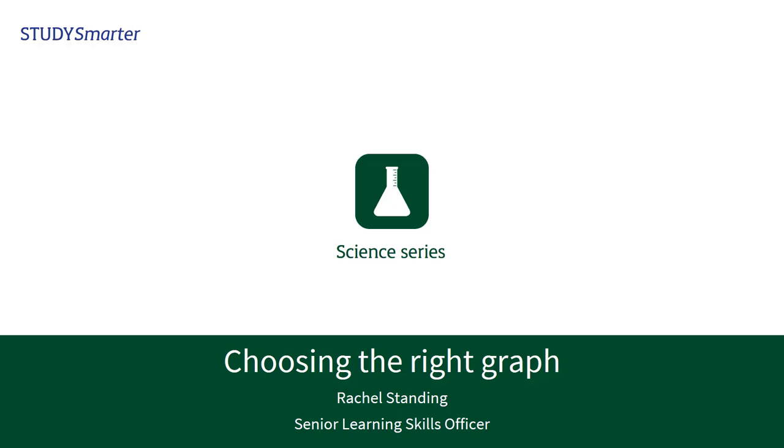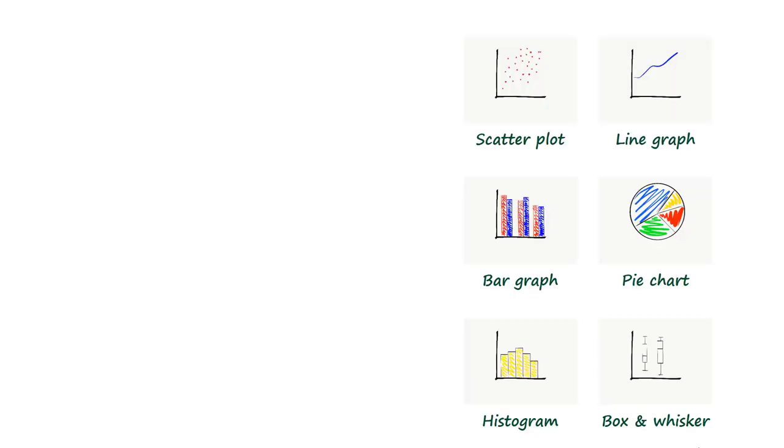In this short video, I will explain six different types of graphs and when to use them. I will cover scatter plots, line graphs, bar graphs, pie charts, histograms and box and whisker plots.